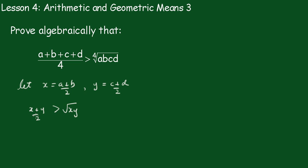So I'm going to replace x with (a+b)/2. We'll have [(a+b)/2 + (c+d)/2]/2 is greater than the square root of [(a+b)/2 × (c+d)/2]. Now this side here becomes (a+b+c+d)/4.